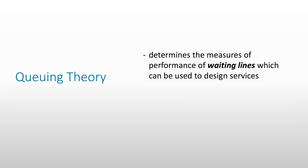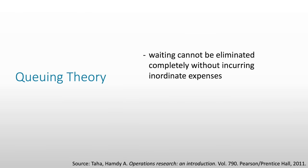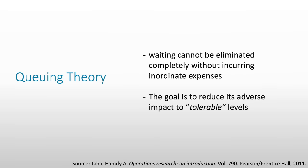So what is queuing theory? Queuing theory determines the measures of performance of waiting lines, which can be used to design services. It is not an optimization technique. Because waiting cannot be eliminated completely without incurring inordinate expenses, the goal of queuing theory is to reduce its adverse impact to tolerable levels. Queuing theory would not give you a solution, but would give you the measurements or the analysis on your queue, and the goal is to reduce its adverse impact to tolerable levels.